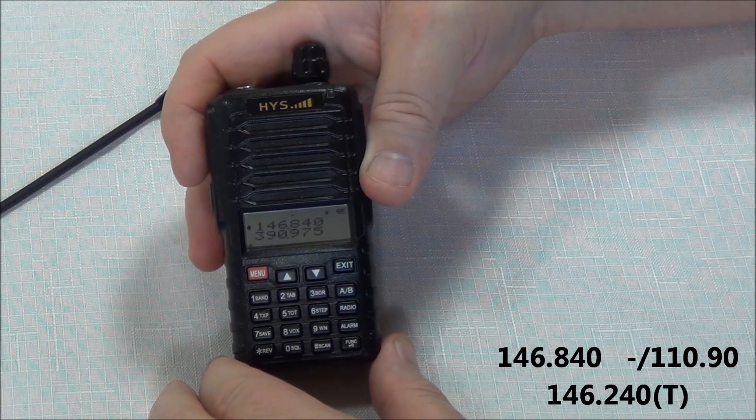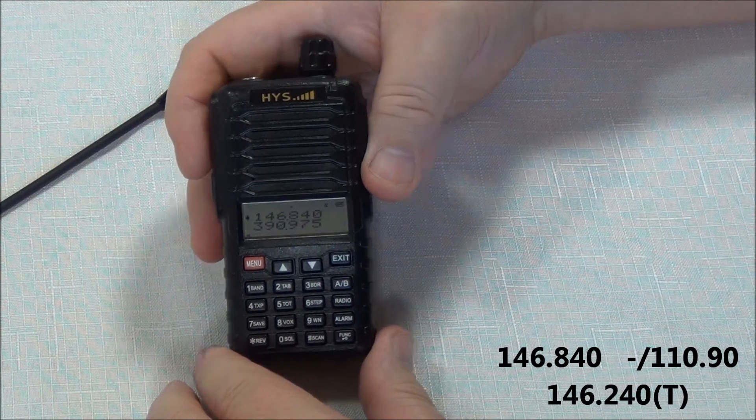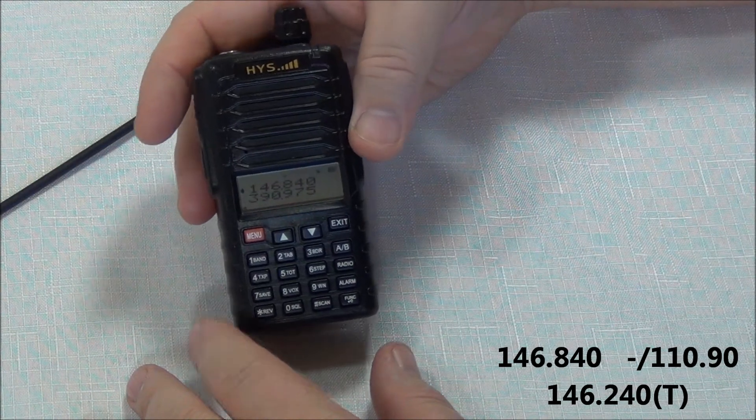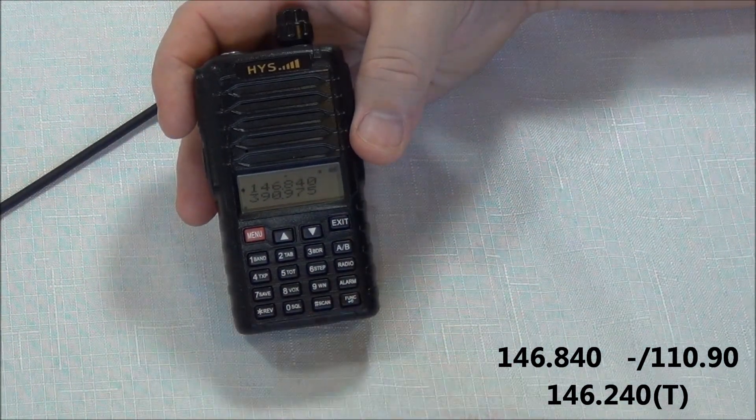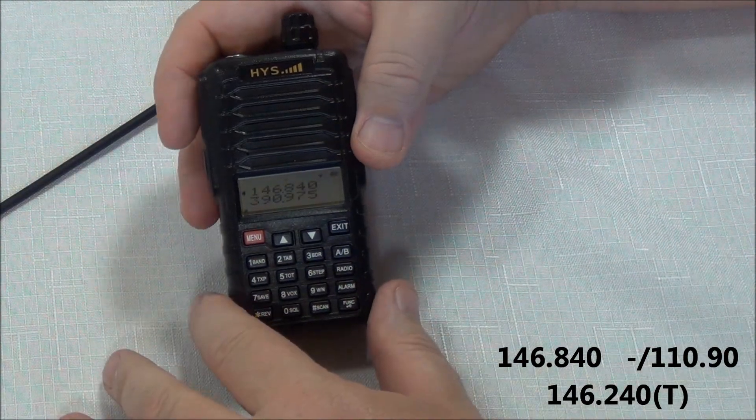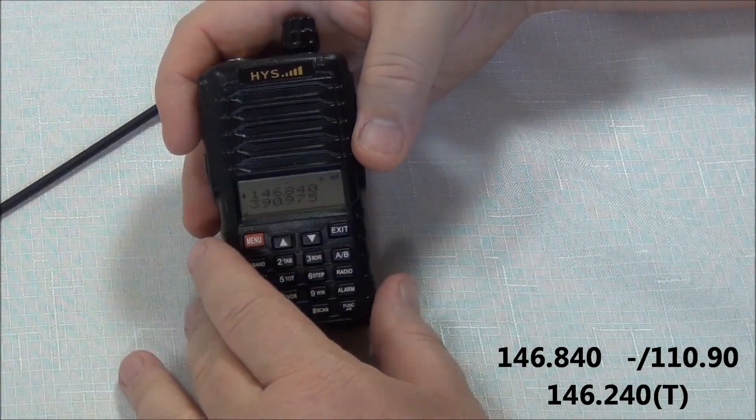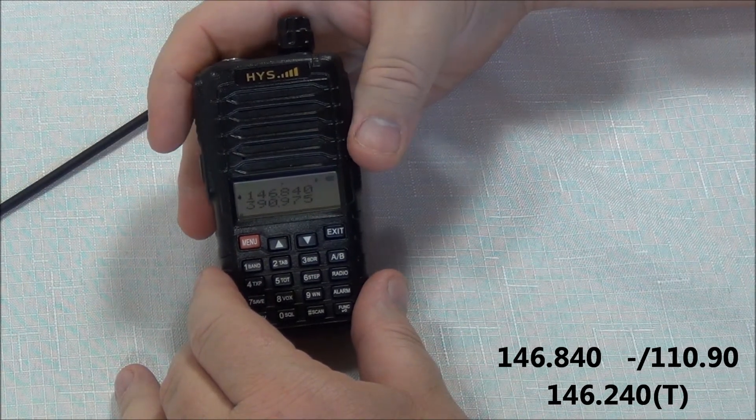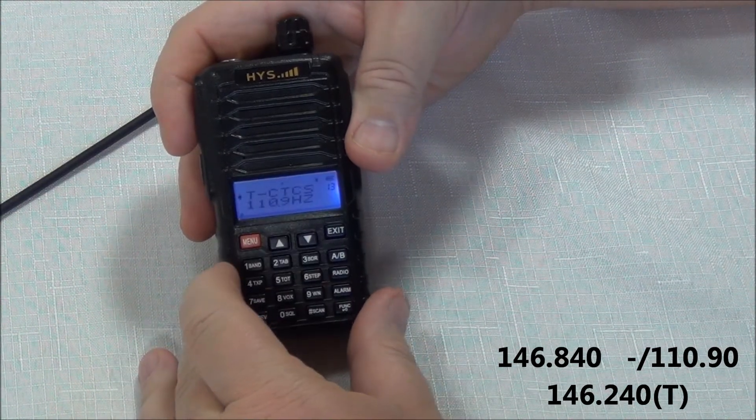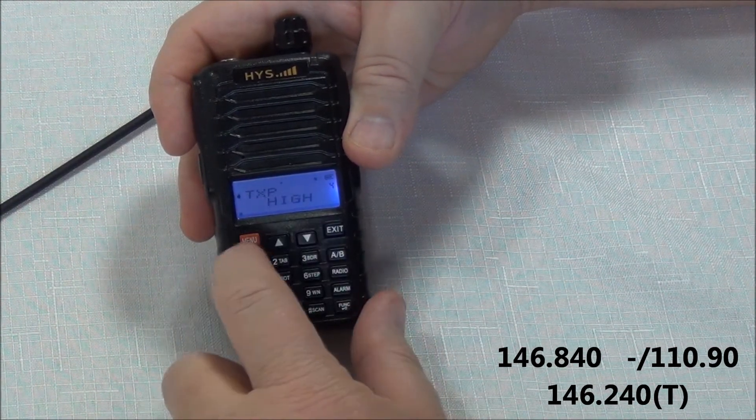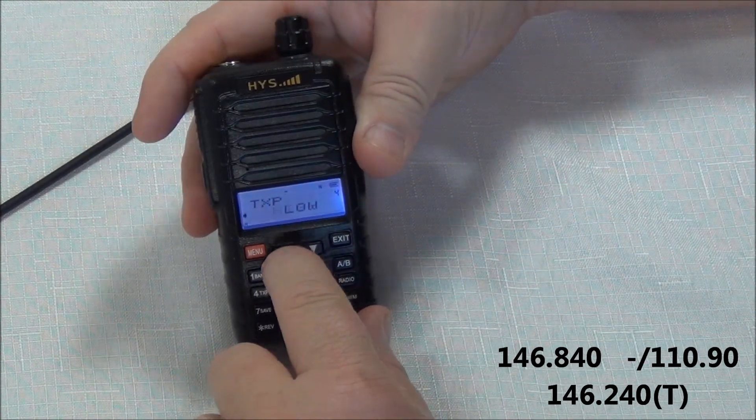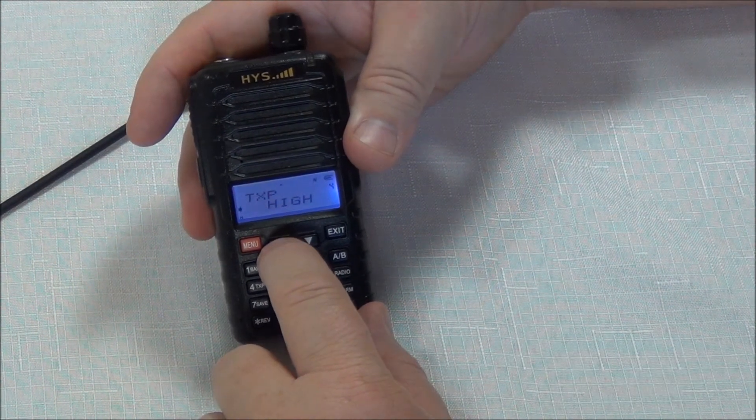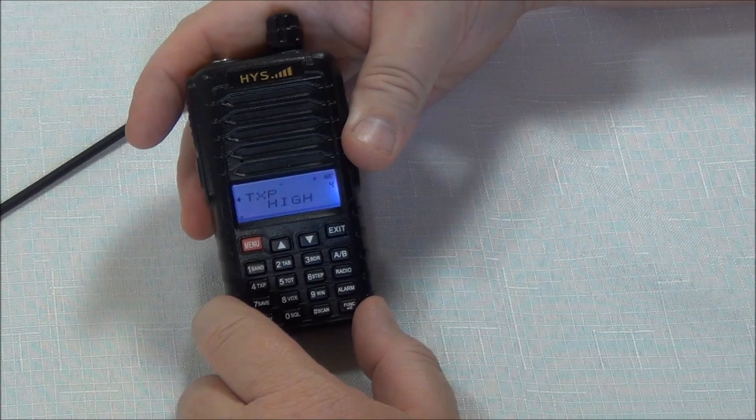The next thing you want to program in is whether or not you want to transmit on high or low power. Now unfortunately this particular repeater is out of the range of this radio. That's probably why we're getting some of that static. But you still want to be able to program whether or not you're high or low depending upon where you're at in relationship to that repeater. So that is actually option number four. So we go to menu 4. Here's your transmit power. Menu to select and your options are low or high. On this radio low is 2 watts, high is 4 watts. And menu to save and exit.